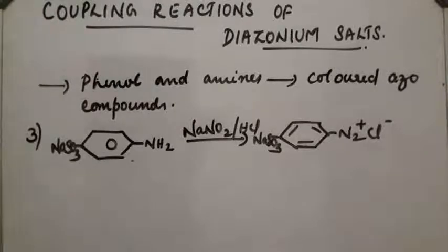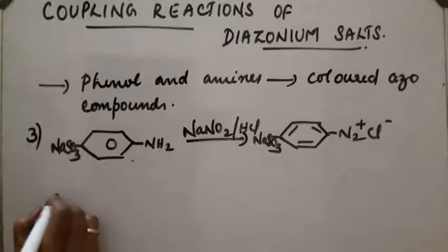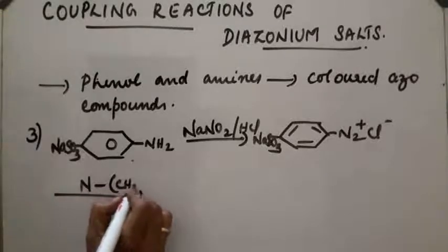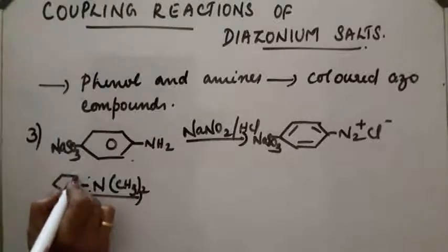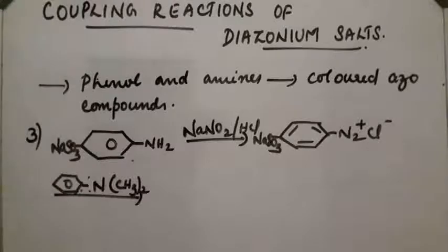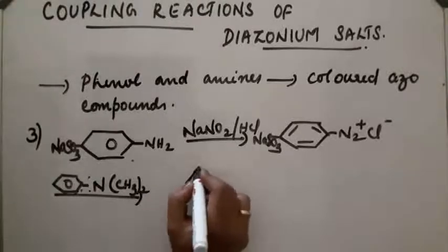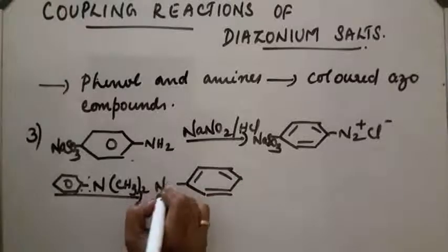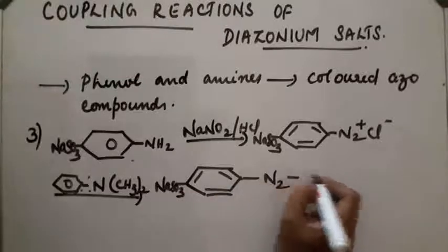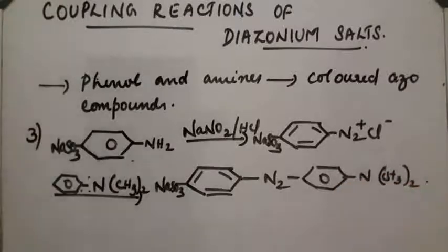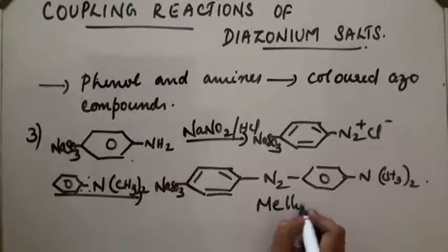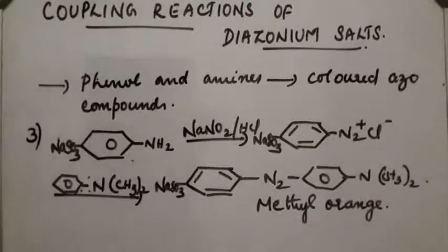So first, para-aminobenzene sodium sulfonate undergoes diazotization to give its diazonium salt. Then, this diazonium salt reacts with N,N-dimethylaniline — that is aniline where two hydrogen atoms are replaced by two methyl groups. The product obtained contains a NaSO₃ group, an N=N linkage, and an N(CH₃)₂ group. This product is called methyl orange, which is an azo dye.